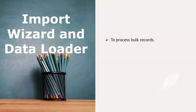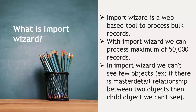The main purpose is to process bulk records. What is the Data Import Wizard? It is a web-based tool to process bulk records. In Data Import Wizard we have a limitation: we can perform up to a maximum of 50,000 records at a time. Also, we can't see a few objects — for example, if there is a master-detail relationship between two objects, the child object cannot be seen.